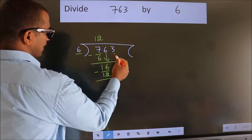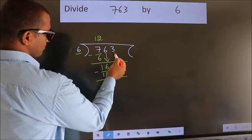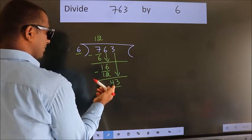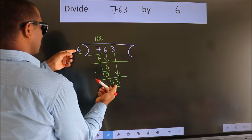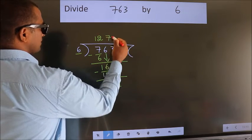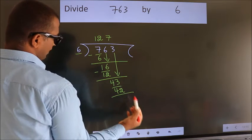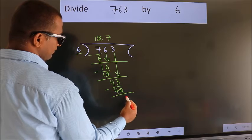After this, bring down the beside number. So 3 down. So 43. A number close to 43 in the 6 table is 6 times 7 is 42. Now we subtract. We get 1.